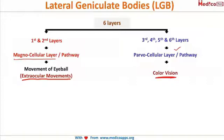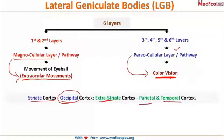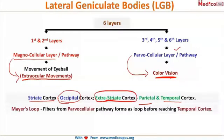The parvocellular pathway is mainly concerned with color vision. So to summarize: magnocellular is for extraocular movement, parvocellular is for color vision. The striate cortex constitutes the occipital cortex; however, there are certain extra striate locations — the parietal and temporal cortex — which also deal with vision. These together are termed the extra striate cortex.